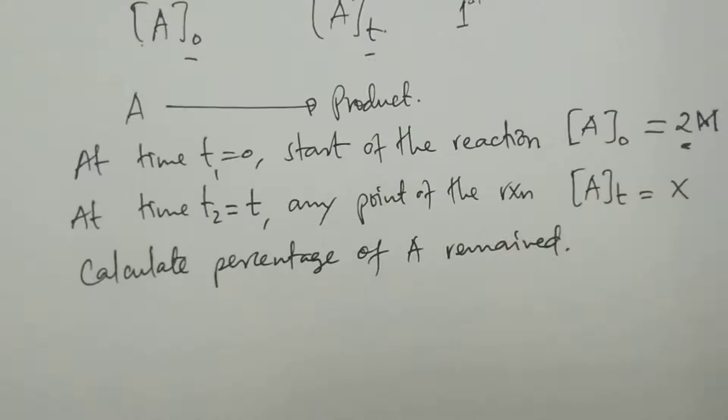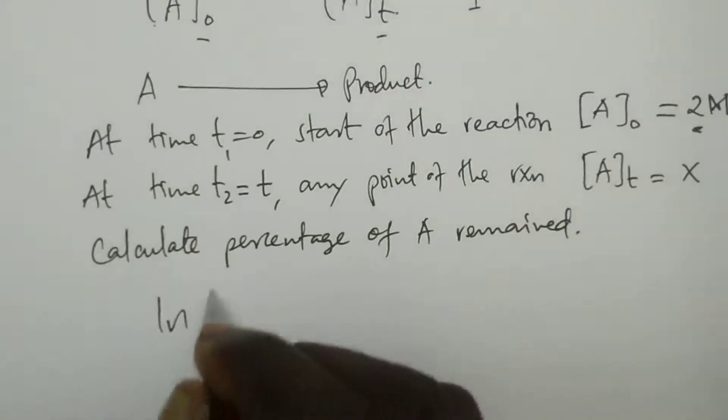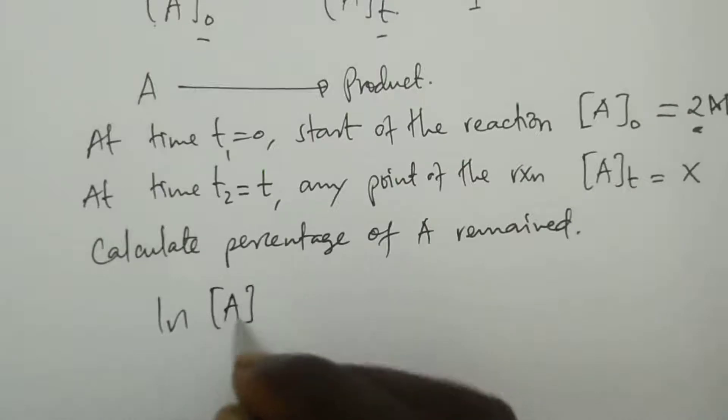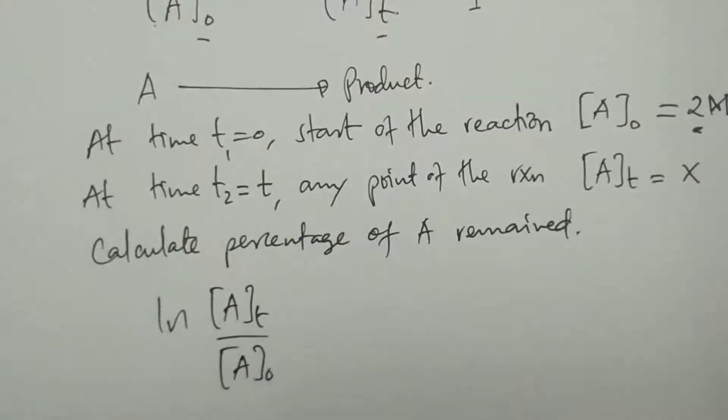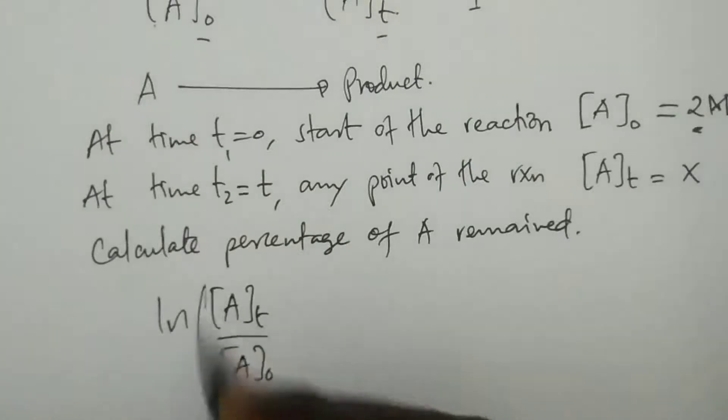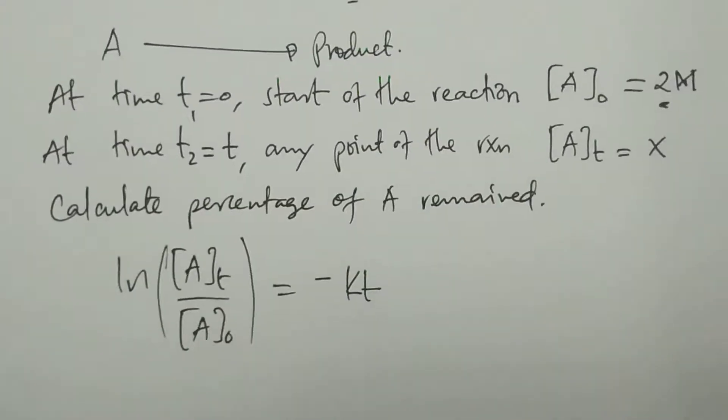If we consider the integrated equation for first order, it is: ln([A]T/[A]₀) equals negative K times T. Let me verify this equation is correct. Yeah, the equation is correct.